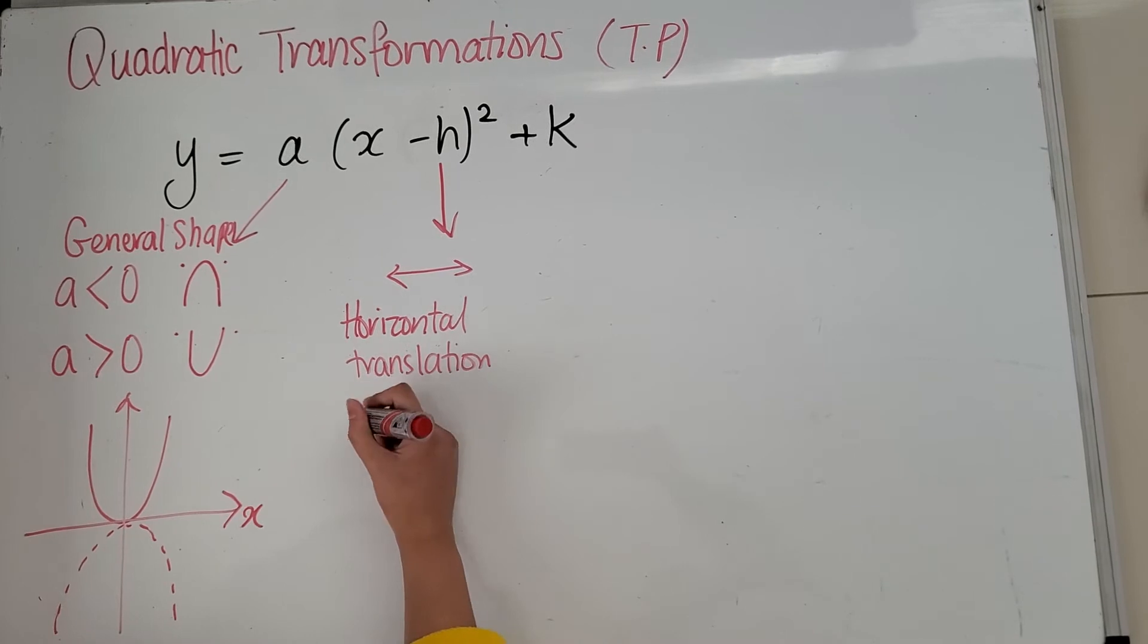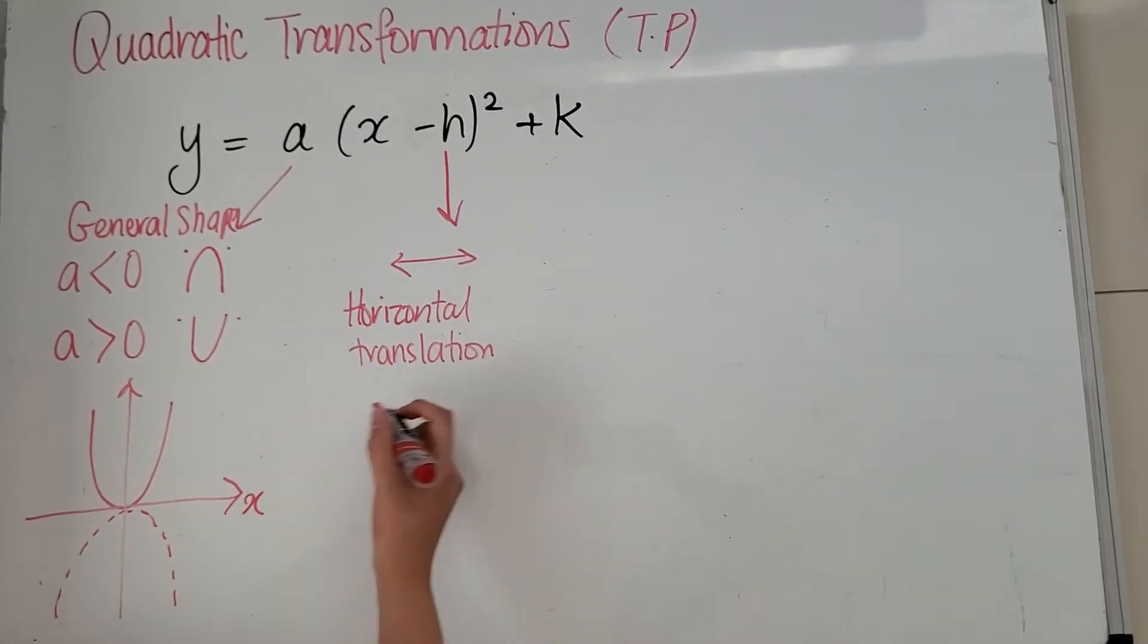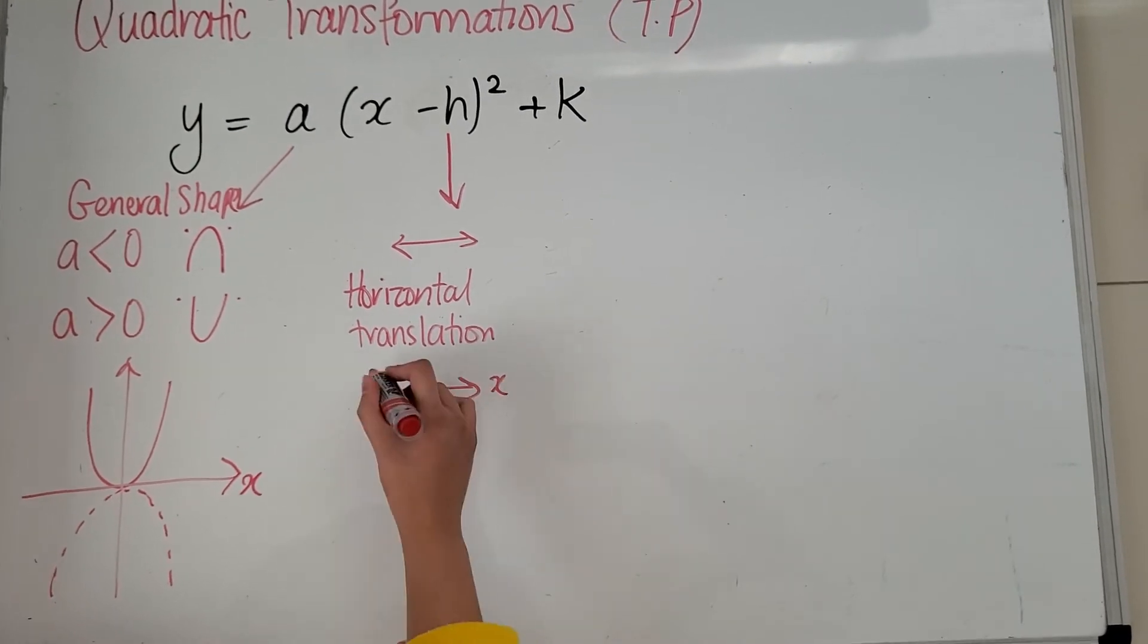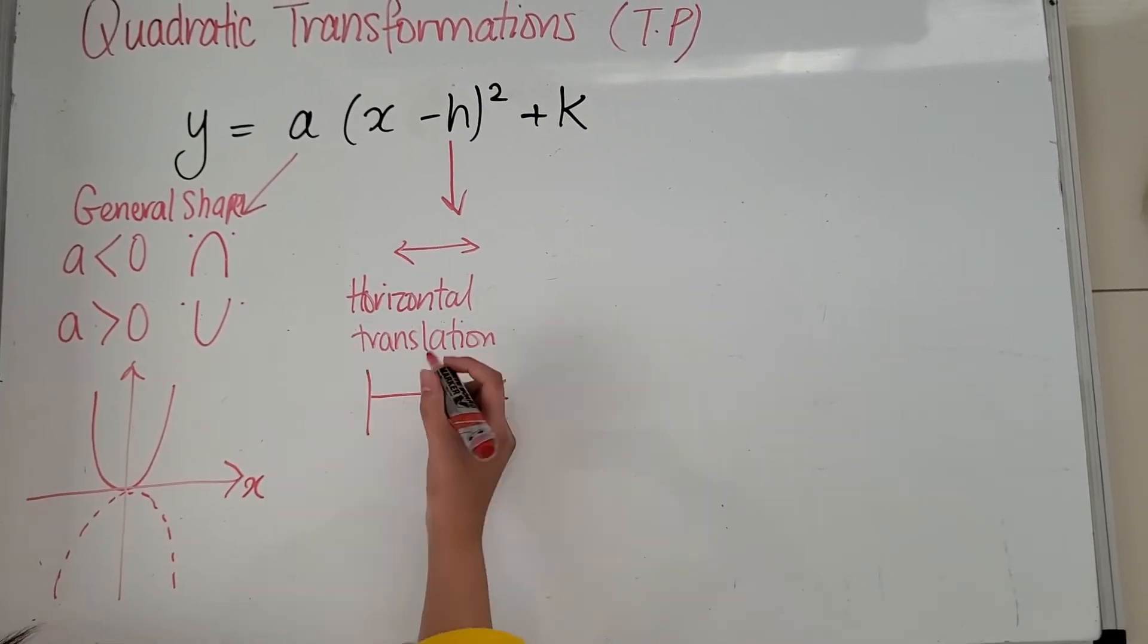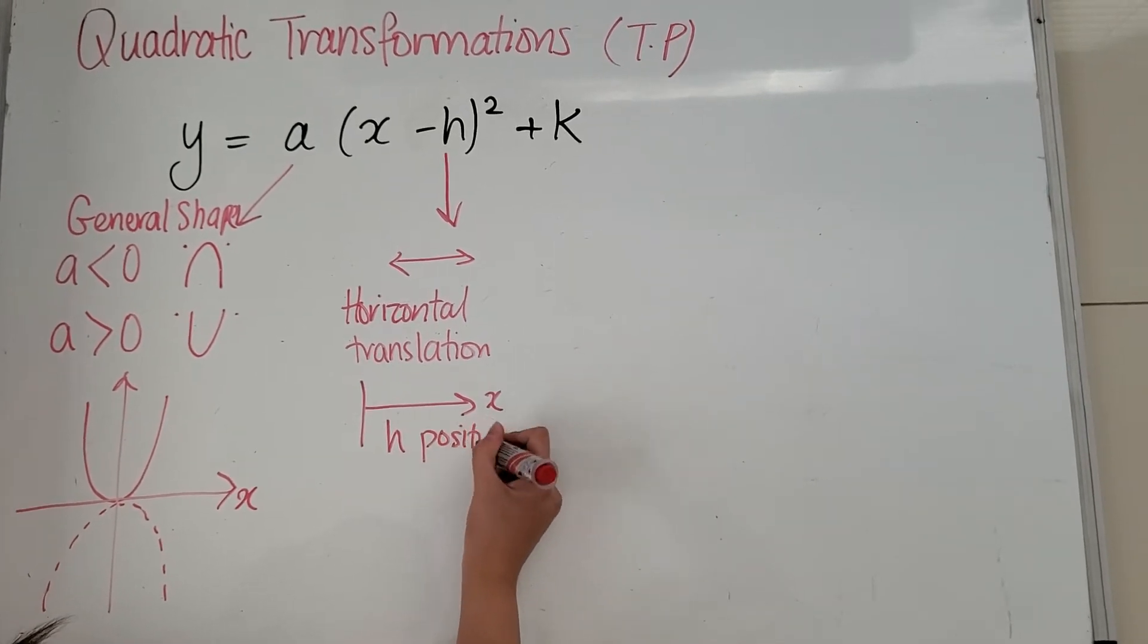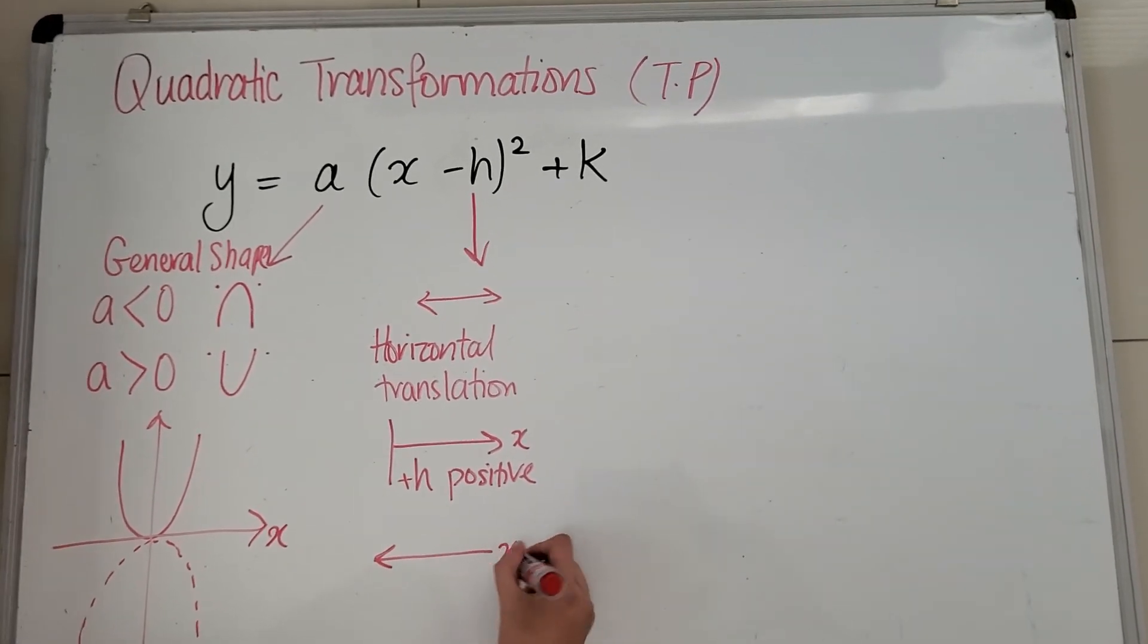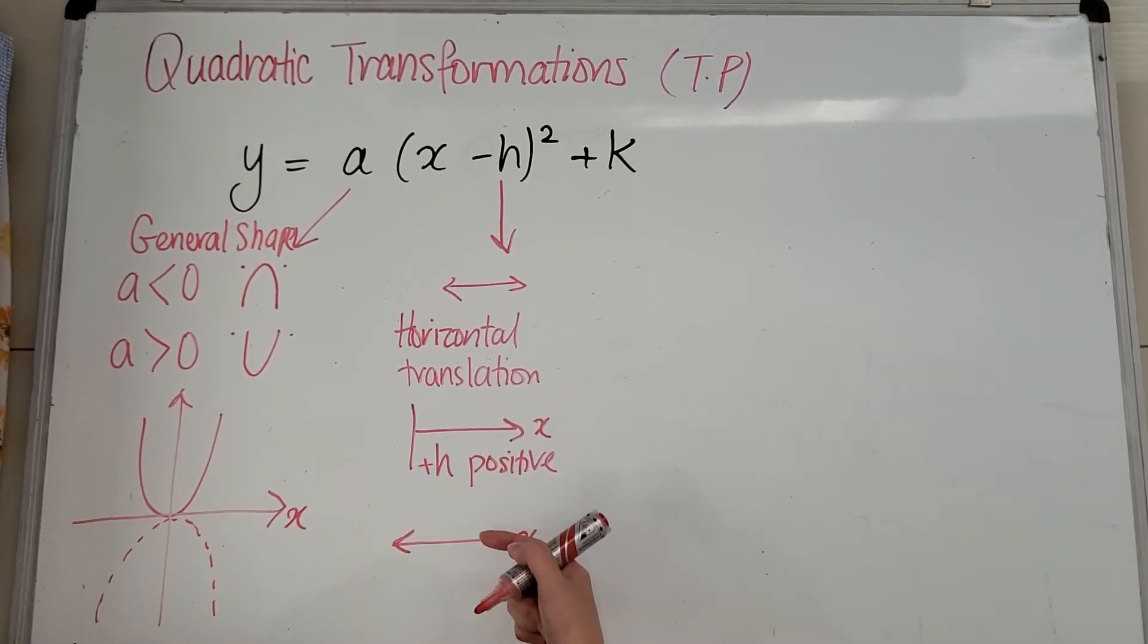So if it's a negative, we're actually doing the opposite. We're going to the right. We're going towards a positive X direction. Positive X. So this is when h is a positive. I'll write plus h as well, which means that when x is a negative, it's going this way.